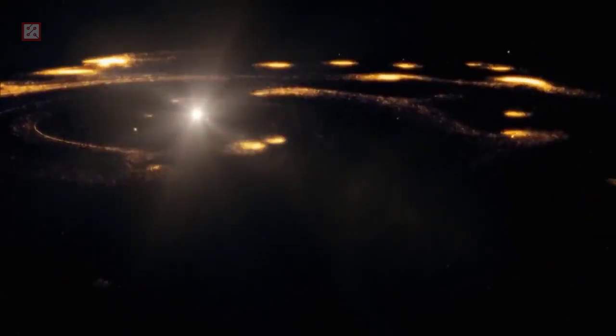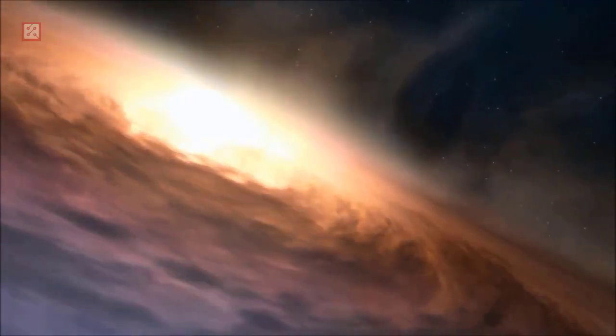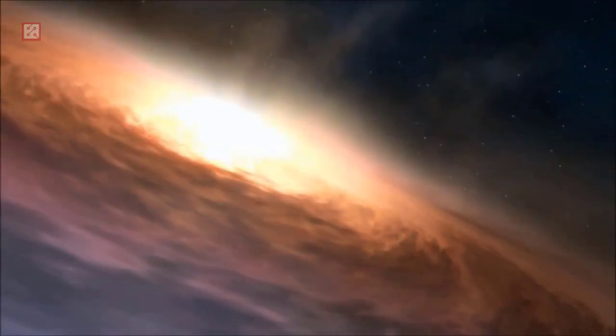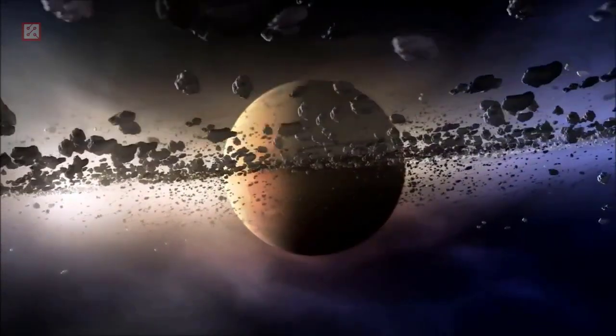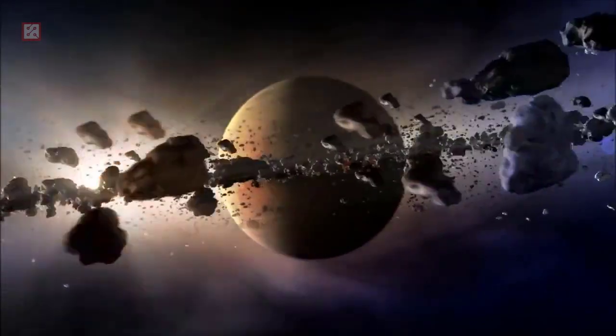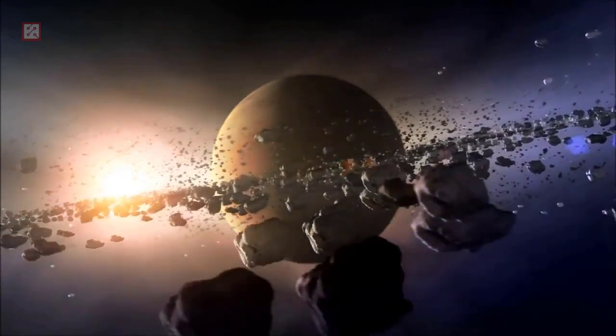The exoplanet is orbiting within the habitable zone of Proxima Centauri. As it's believed to be tidally locked to its host star, around the terminator line, the temperature may be favorable for the existence of liquid water on its surface. However, the planet is subject to stellar wind pressures of more than 2,000 times those experienced by Earth from the solar wind and several more potentially hazardous physical conditions.